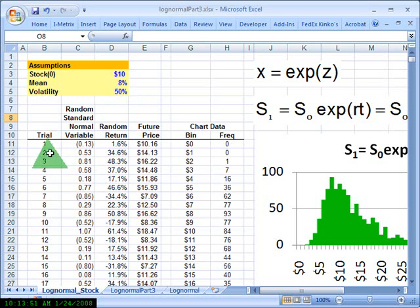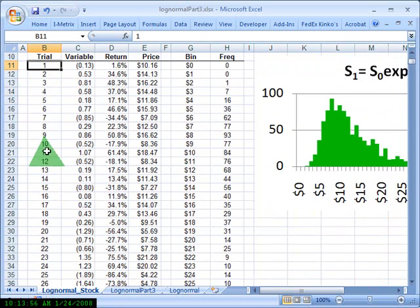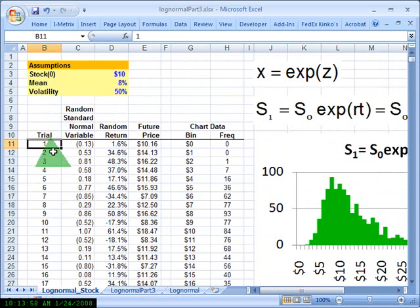Then I've simulated 1,000 trials. I won't show you all those, but that's the power of Excel. I can go all the way down to 1,000 trials. Let's just take a look at the first trial. The first thing I need to do is generate a random standard normal variable. To do that, I use a common function here.